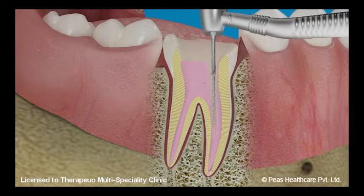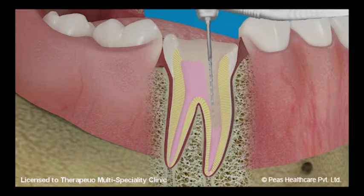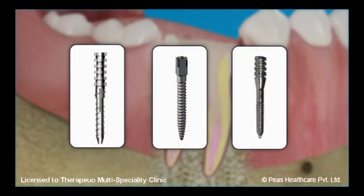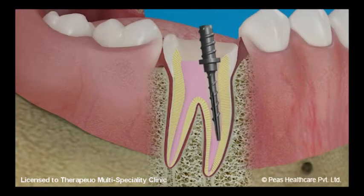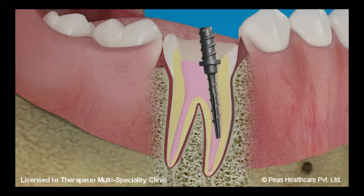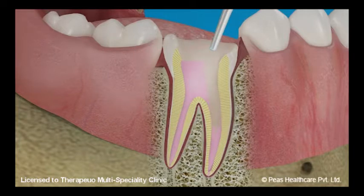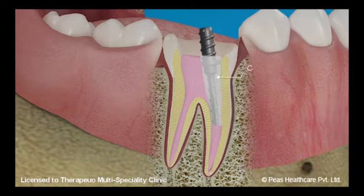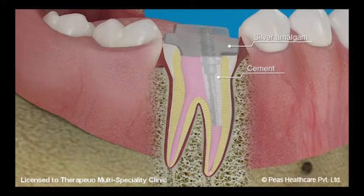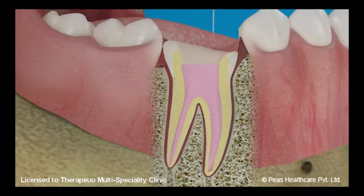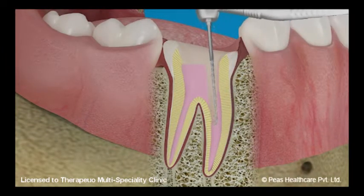Once the root canal is cleaned, shaped, and filled, a post space is prepared using special drills. A correct size and shape post is selected. If your dentist is using a metal post, he or she will shape the post to match the post space created in the root canal. The post space is then dried, the cement is mixed, and the post is cemented into the post space. Usually a silver amalgam based core is built up on a metal post.